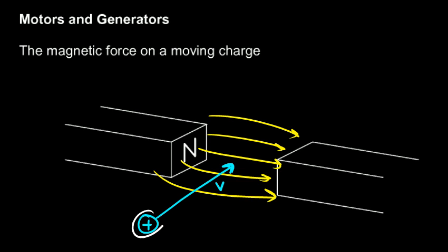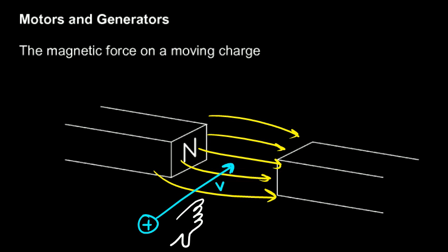If you point your fingers in the direction of the velocity such that they naturally bend in the direction of the field, then your thumb naturally points in the direction of the force. It turns out that any moving charged particle like this, moving across these magnetic field lines — a charged particle moving across a magnetic field — will experience a force. And the direction is given by the right-hand rule.